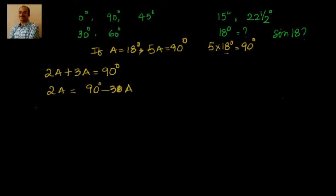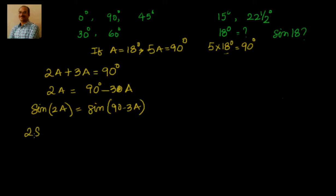Now if I apply sin to both sides: sin(2a) equals sin(90 minus 3a). We know from multiple angles that sin(2a) equals 2 sin(a) cos(a). And we also know that sin(90 minus theta) equals cos(theta), so this is nothing but equal to cos(3a).